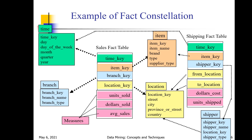The foreign keys in the shipping fact table are time key, item key, shipper key, from location, and to location. The item key connects the shipping fact table with the sales fact table through the item dimension table. Similarly, the from location and to location keys connect the shipping fact table to the sales fact table using the location dimension.